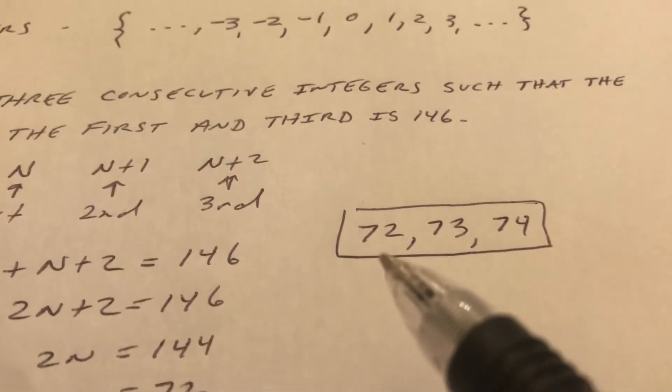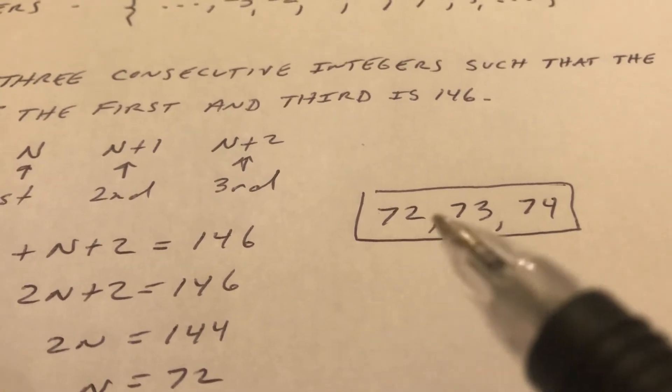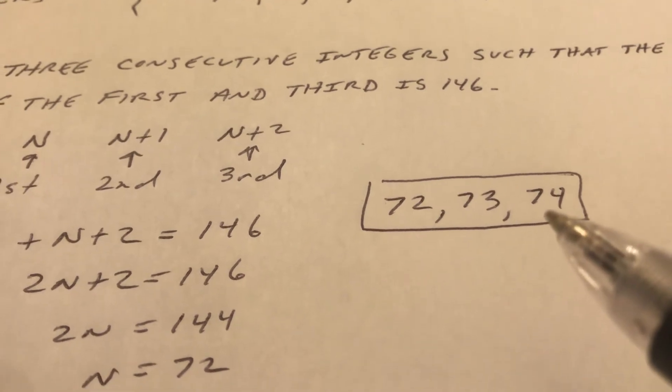So my answer is 72, 73, 74. And you can see the sum of the first and the third is 146.